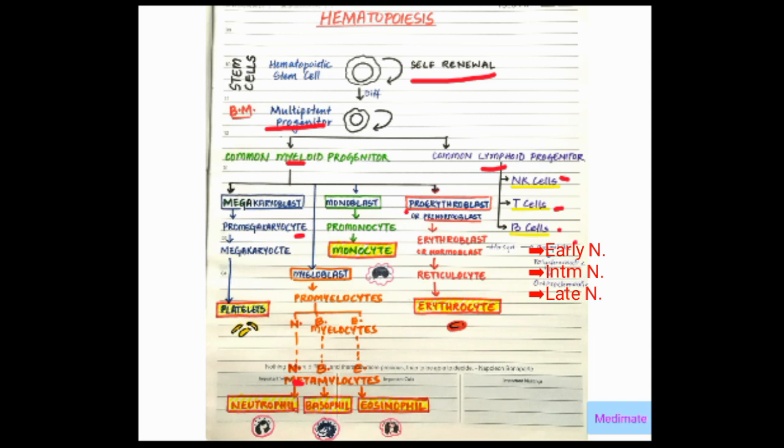Then it divides to form early normoblast, which is basophilic, which further divides to intermediate normoblast, where the hemoglobin first appears, which is polychromatic. This further divides to late normoblast, which is orthochromatic.